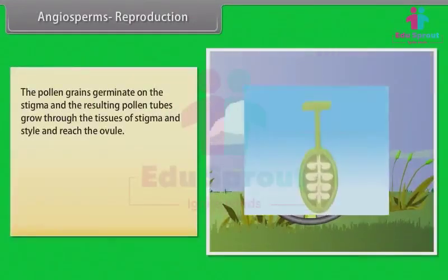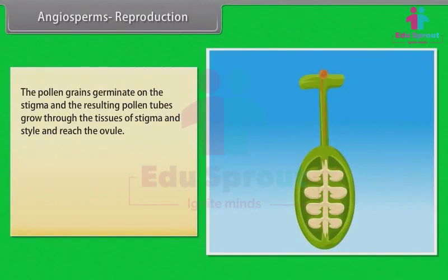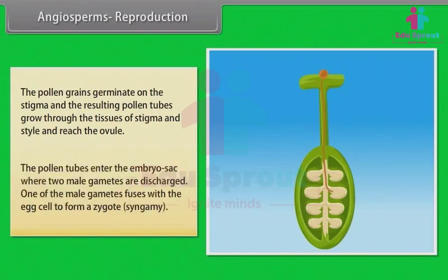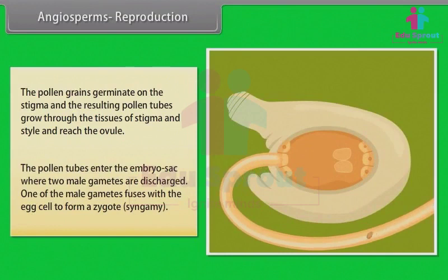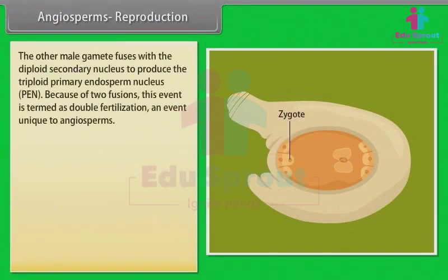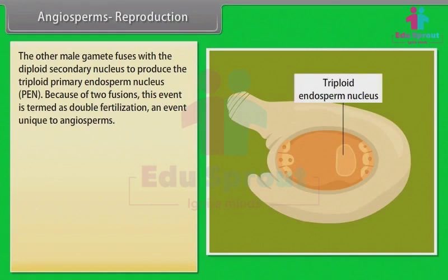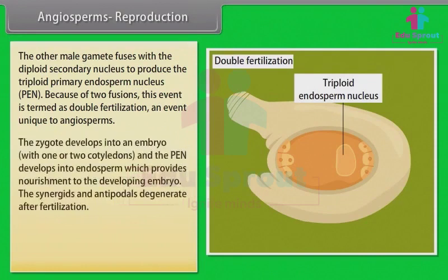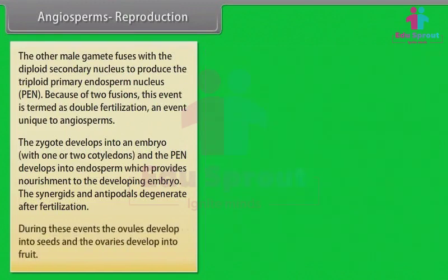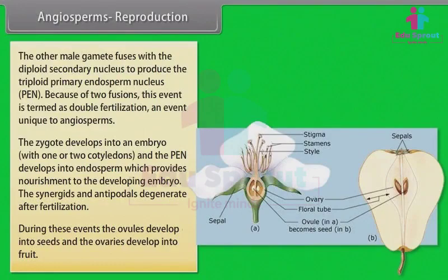The pollen grains germinate on the stigma and the resulting pollen tubes grow through the tissues of the stigma and style and reach the ovule. The pollen tubes enter the embryo sack where two male gametes are discharged. One of the male gametes fuses with the egg cell to form a zygote (syngamy). The other male gamete fuses with the diploid secondary nucleus to produce the triploid primary endosperm nucleus (PEN). Because of these two fusions, this event is termed double fertilization — an event unique to angiosperms. The zygote develops into an embryo with one or two cotyledons, and the PEN develops into endosperm, which provides nourishment to the developing embryo. The synergids and antipodals degenerate after fertilization. The ovules develop into seeds and the ovaries develop into fruit.